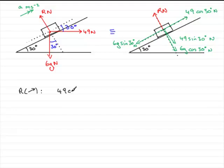So I put that in, 49 cos 30 degrees. We've got the component of the weight that acts down the plane. That's this one here.